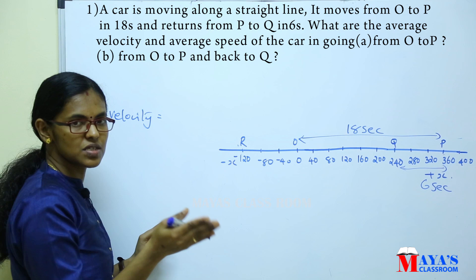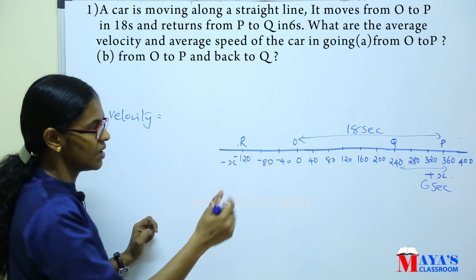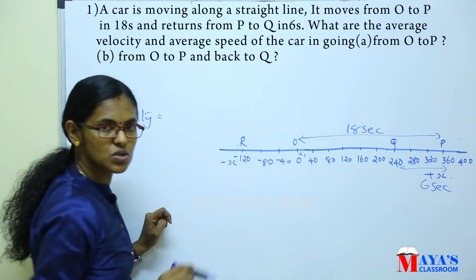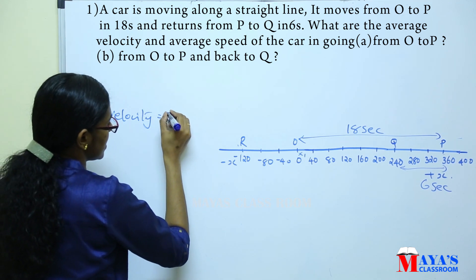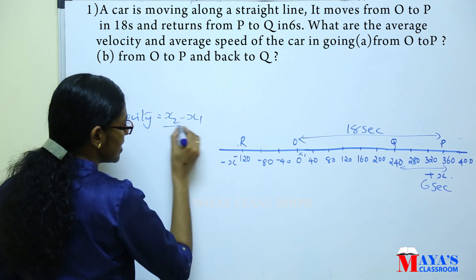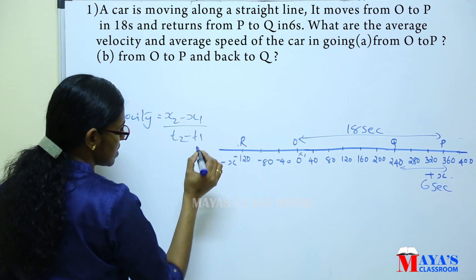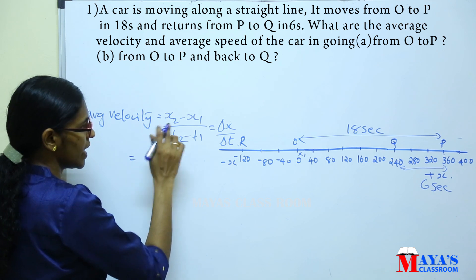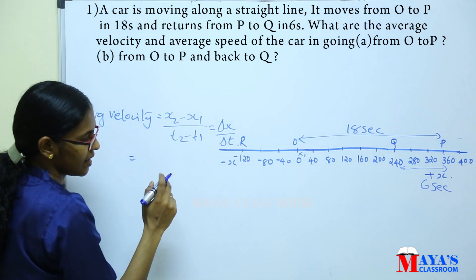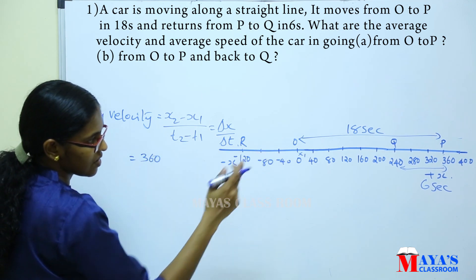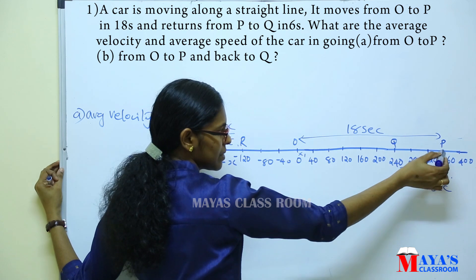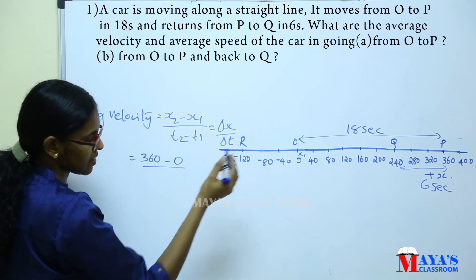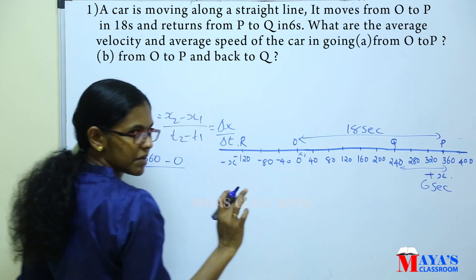Average velocity is the final position minus the initial position — that is x2 minus x1 divided by the time interval t2 minus t1, which equals delta x divided by delta t. So x2 is the position of P, which is 360 meters. The initial position is 0.